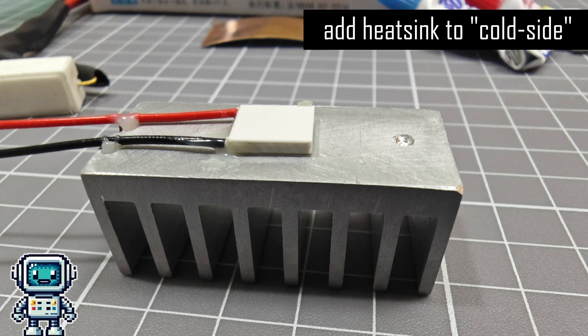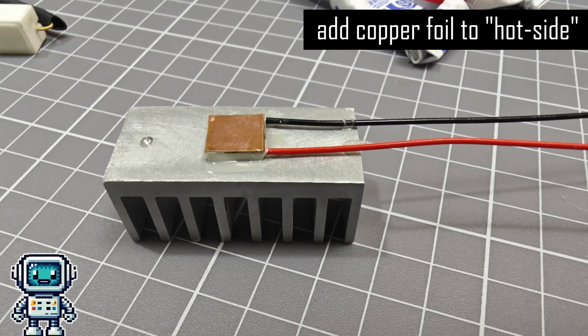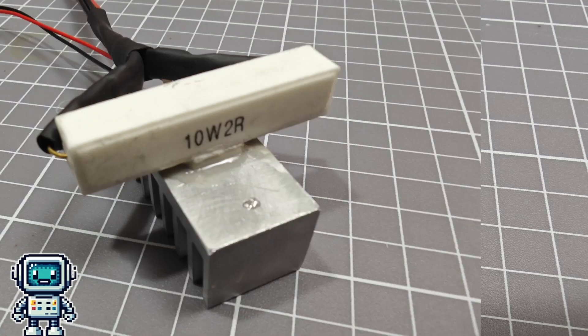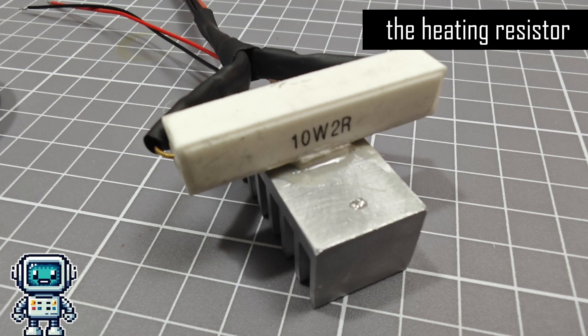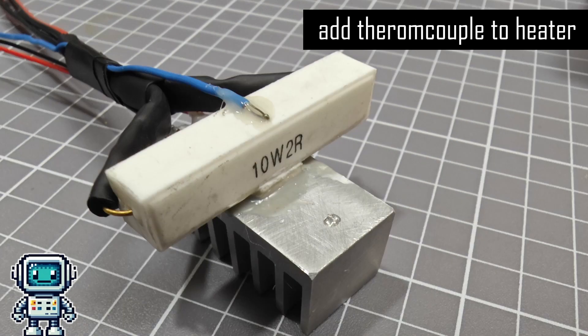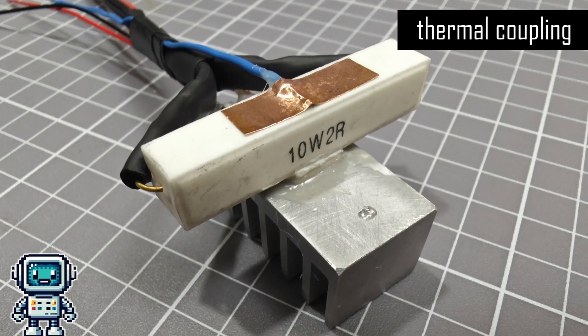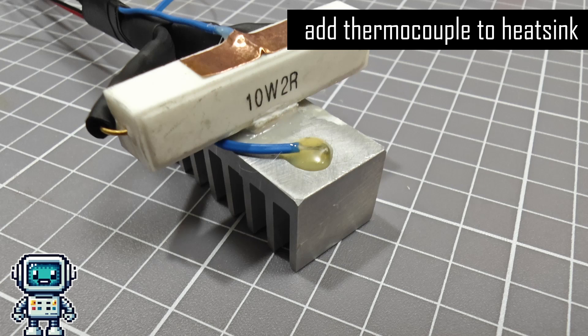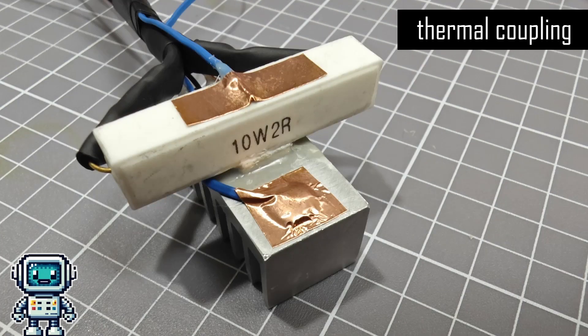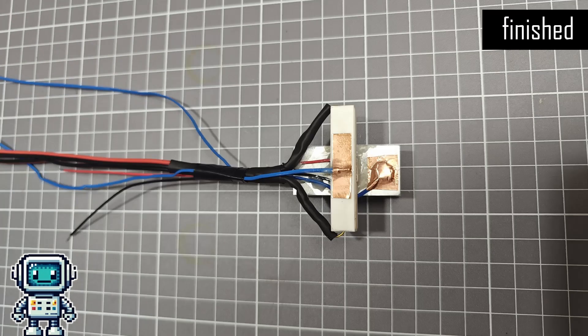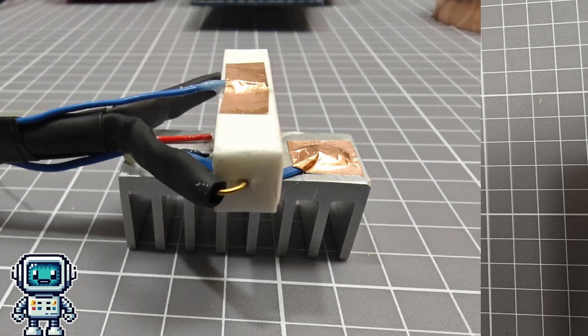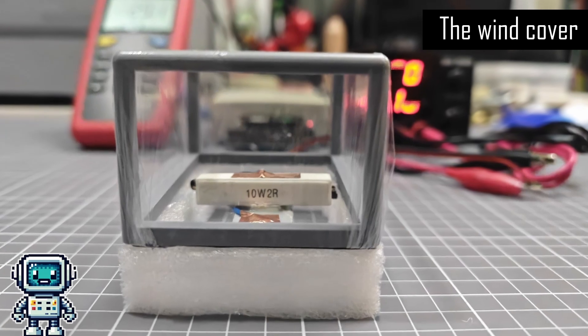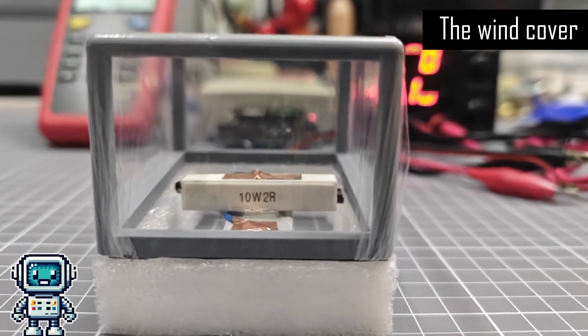Here is how we constructed our experimental thermopile from a Peltier effect device. We used a heat sink on the cold side of the device to keep it as close to ambient temperature as possible. On the hot side, we used a power resistor. This is a very convenient and controllable source of thermal power. We can precisely control this energy flow with just a bench power supply. And finally we added a wind cover. This helps to keep any convection at a constant rate during the experiment.